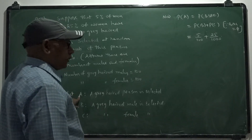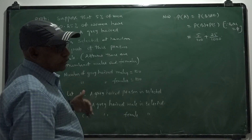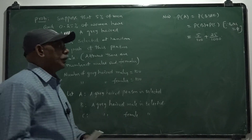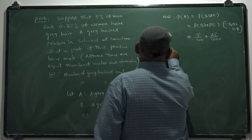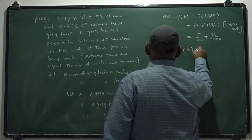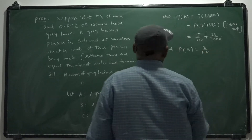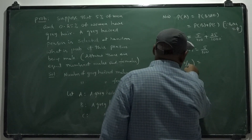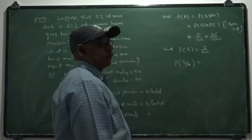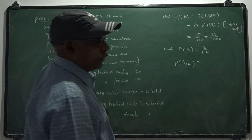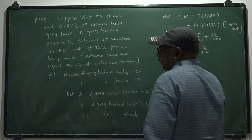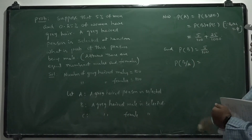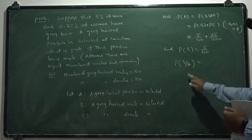Now once a gray-haired person is selected, he must be a male — that is the probability needed here. The probability of B given A is needed: the conditional probability of B on the occurrence of A, meaning the probability of selecting a male given that a gray-haired person is selected.